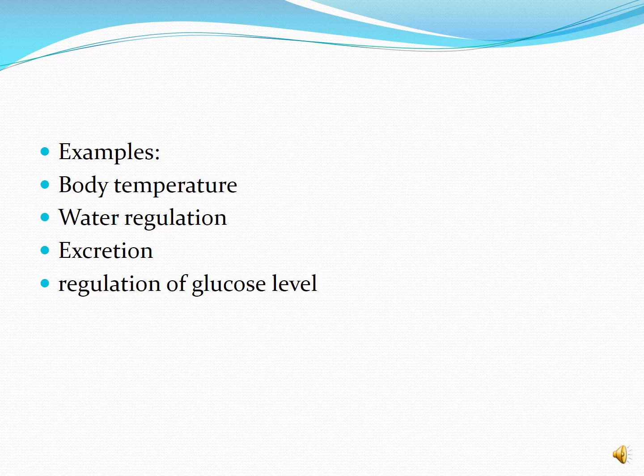Body temperature is a good example of homeostasis. When a person is healthy, the body maintains a temperature close to 98.6°F. When you shiver in the cold or sweat in the summer, that is your body trying to maintain homeostasis.